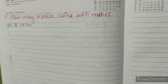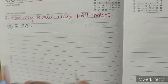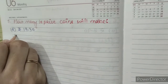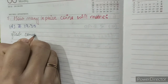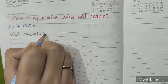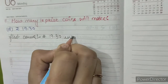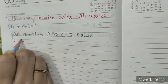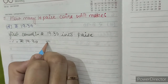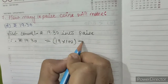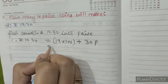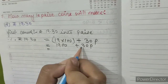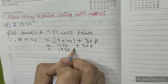Question number 7: How many 10 paise coins will make Rupees 19.30? So first, convert Rupees 19.30 into paise. Therefore, Rupees 19.30 equals 19 into 100 plus 30 paise, which is 1900 plus 30 paise, giving us 1930 paise.